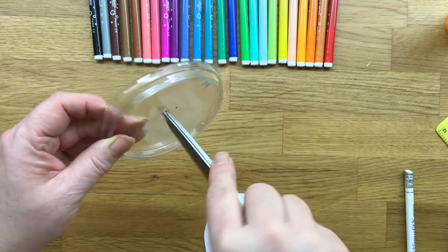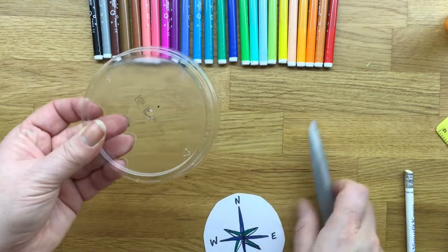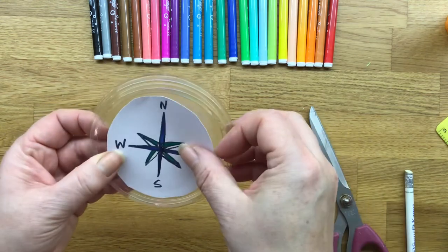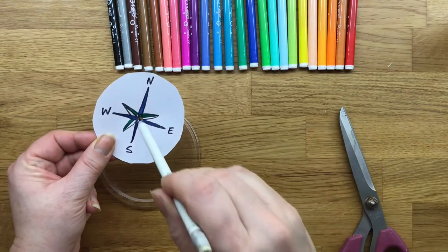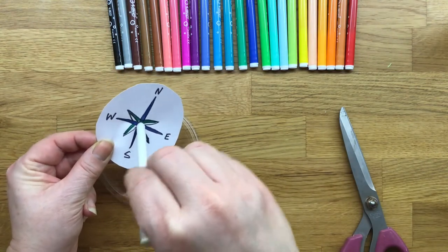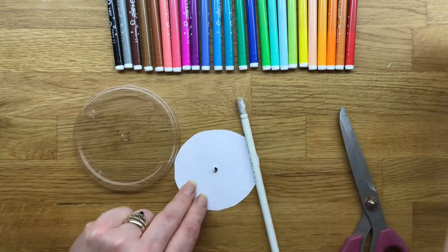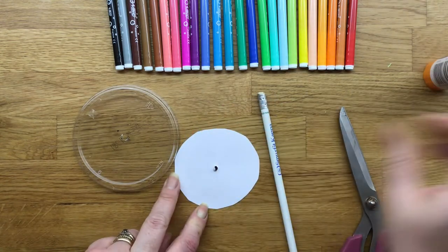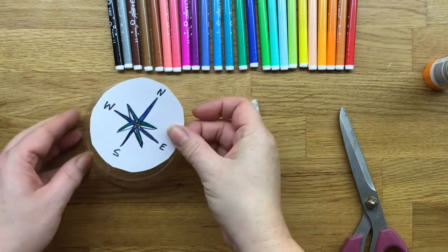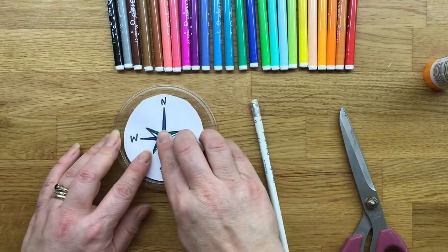Next you'll need to ask your adult helper to put a hole in the top of the lid for you. We now need to make a hole in the top of the compass. So in the centre point use a pencil and push that through to make the hole. Then glue your paper disc onto the top of your plastic lid just as I'm doing here.